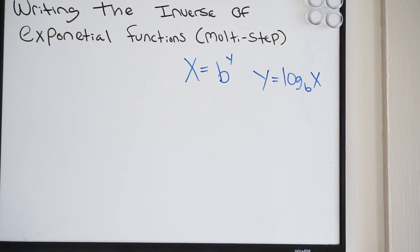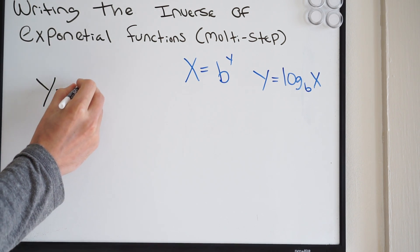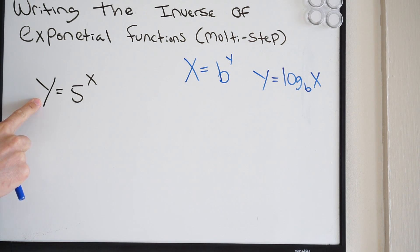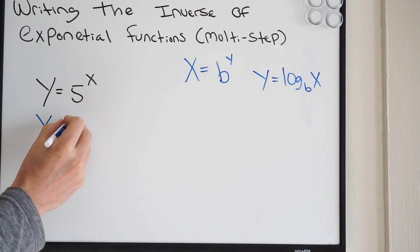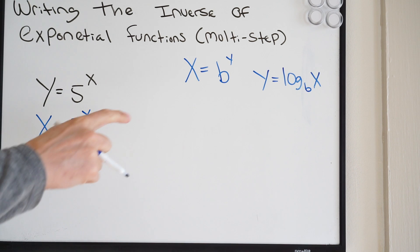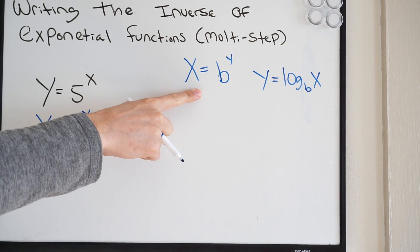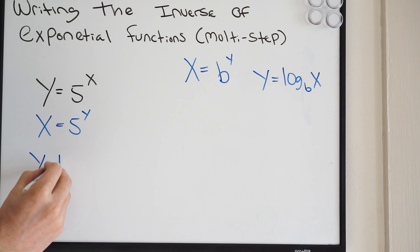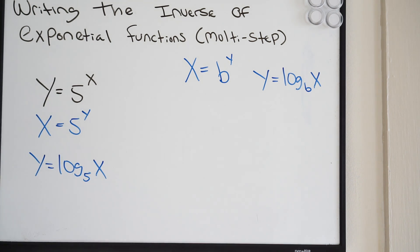So for example, we've been talking about this: if we have y equals 5 to the x power, here's our exponential. This would be considered a single-step process of writing the inverse. We replace the y with x and the x with y, so we get x equals 5 to the y, and we know that the inverse of an exponential is always going to be a log.